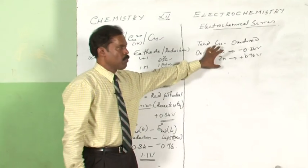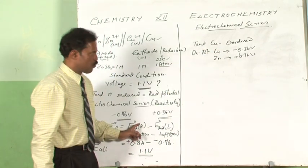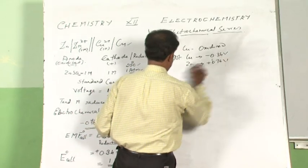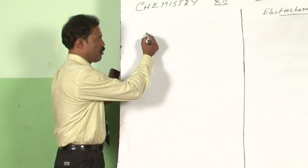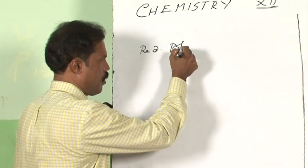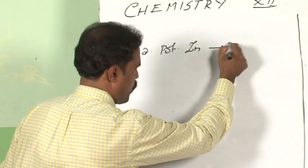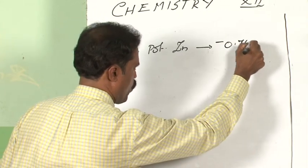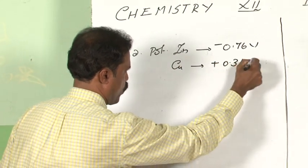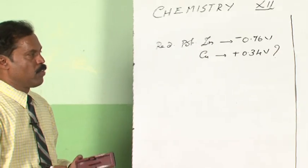It does not mean that oxidation potential values cannot be used — you can use oxidation potential values as well to find out the EMF of the cell. The next discussion is how to obtain reduction potential values. We will now examine how these reduction potential values of the electrodes are found out. The reduction potential value of zinc is minus 0.76 volts and that of copper is plus 0.34 volts.